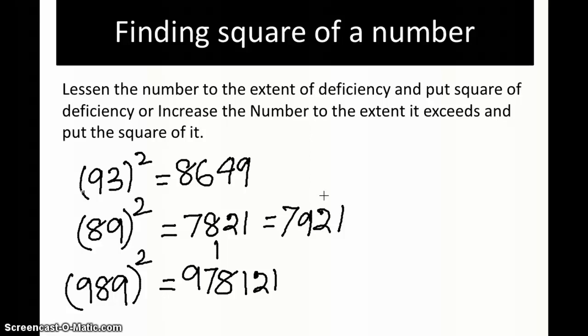Let's find something for a number which is more. Consider the case of 109 squared. Here the second part of the rule comes into picture: increase the number to the extent it exceeds the base, which is 100, by 9. So 109 plus 9 becomes 118, then put the square of the increased part, which is 9, so 81.